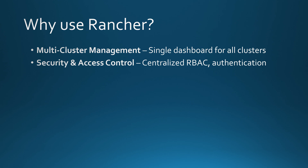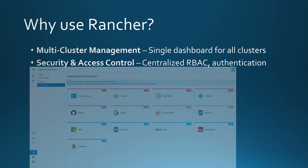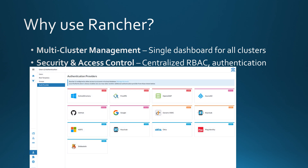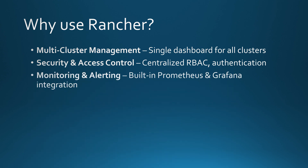Security in Kubernetes is tricky. Managing users, setting permissions, and ensuring proper access controls can be a real headache, especially across multiple clusters. With Rancher, security is centralized and simplified. You can integrate Rancher with authentication providers like Active Directory, GitHub, LDAP, and SAML, so users can log in with their existing credentials. Plus, Rancher comes with built-in role-based access control, which lets you define who gets access to what, down to individual clusters, workloads, and namespaces.